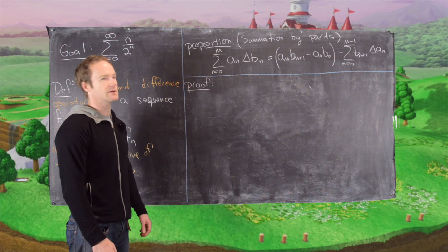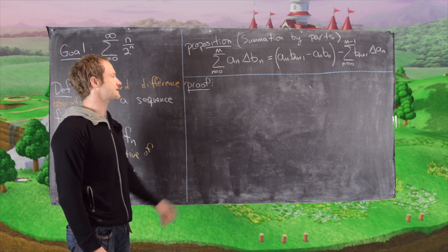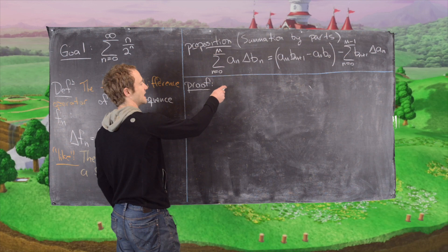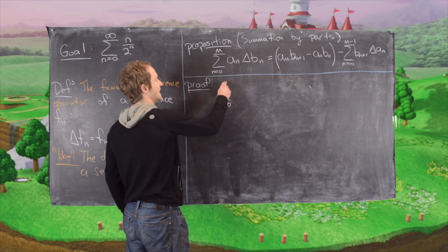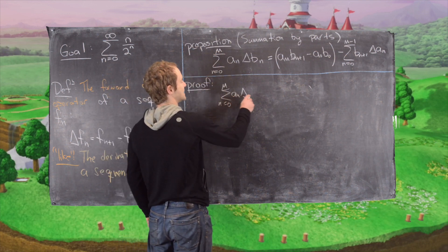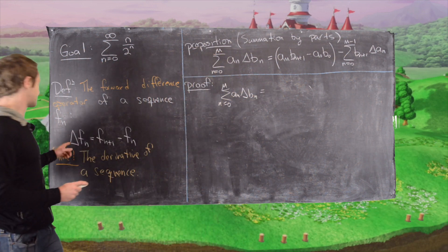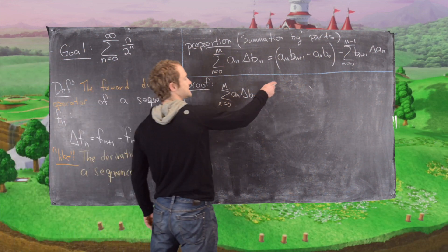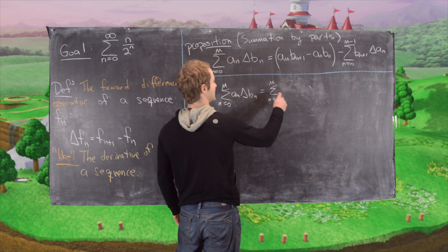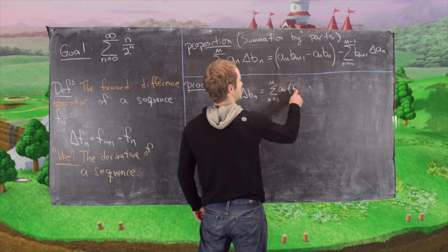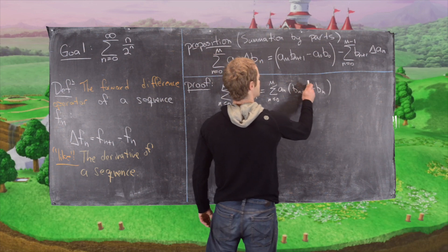Let's look at this proof — it's pretty simple. It just involves pulling out a couple of terms and then re-indexing. Starting with the left hand side, we have the sum n equals 0 to m of aₙ delta bₙ. By the definition of the forward difference operator, this is the sum n equals 0 to m of aₙ times bₙ₊₁ minus bₙ.